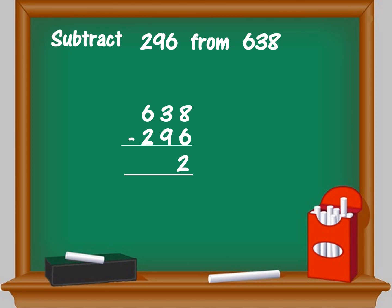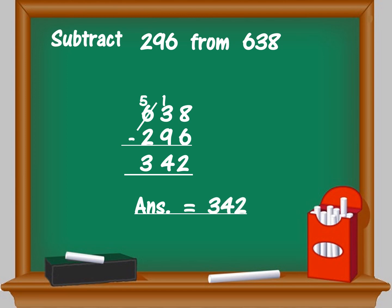So you borrow from the hundreds place. 6 becomes 5, and in the tens place you borrow 1, giving you 13 minus 9 which equals 4. In the hundreds place you have 5 minus 2 which equals 3. The answer, or the difference, is 342.